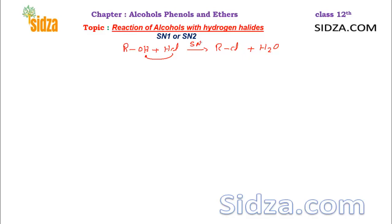Whether an alcohol undergoes this substitution through an SN1 mechanism or SN2 actually depends on the type of alcohol. One important point: the hydroxide group as such is considered to be a bad leaving group — it's not easy to remove the hydroxide group. Therefore, in an acidic medium, the hydroxide reacts with a proton and then forms a better leaving group.